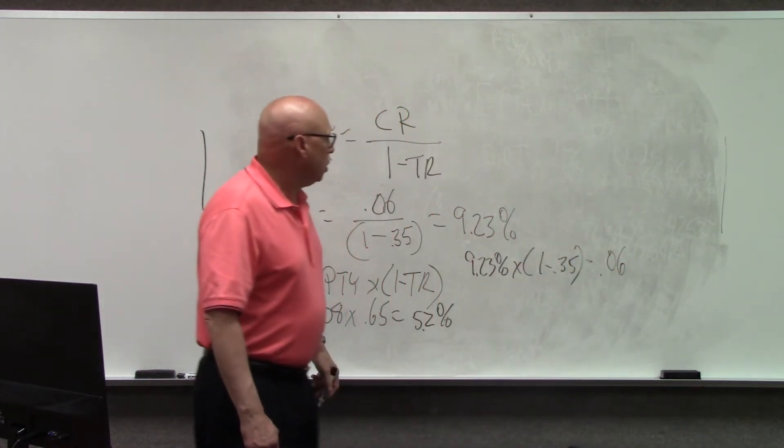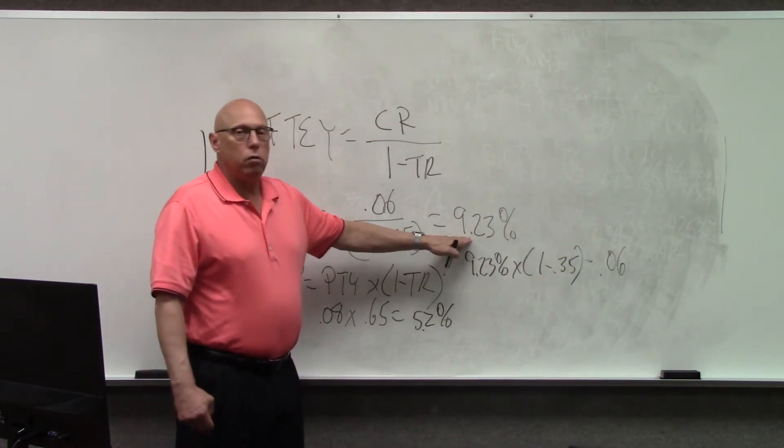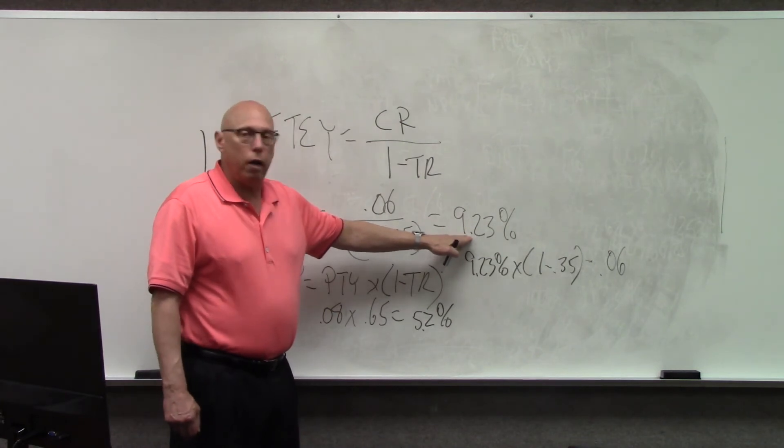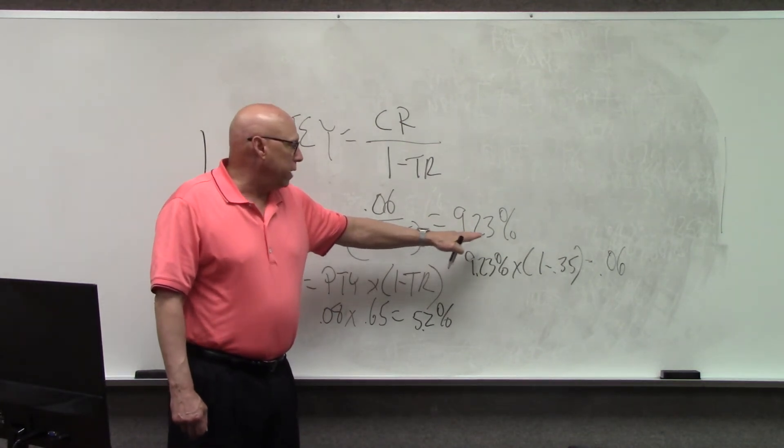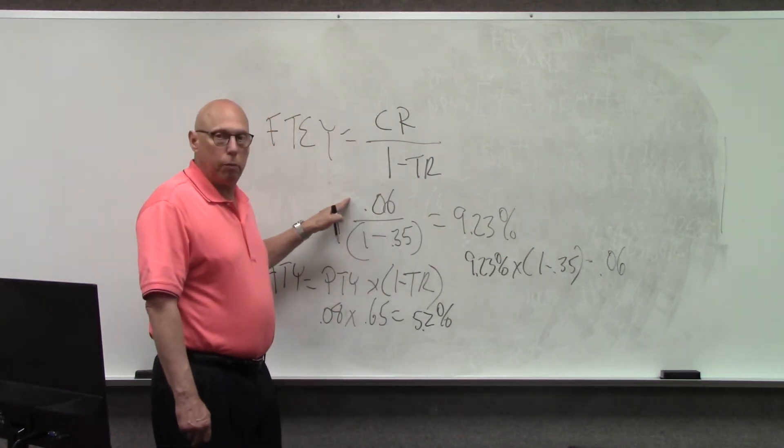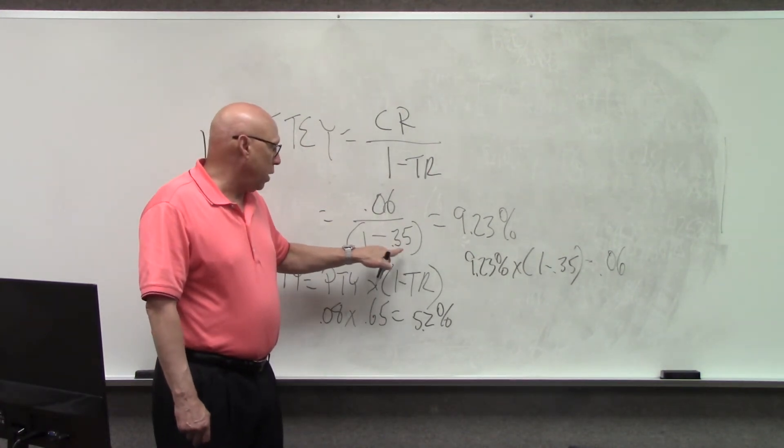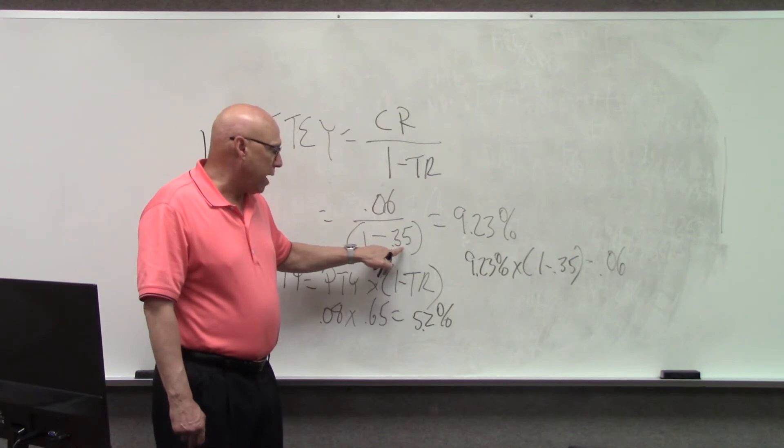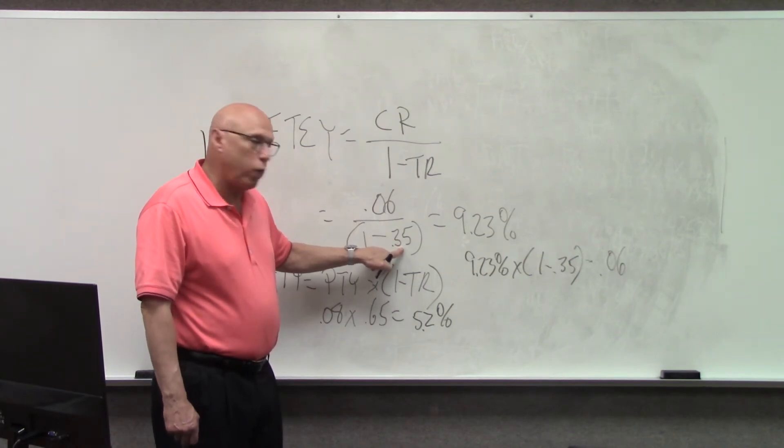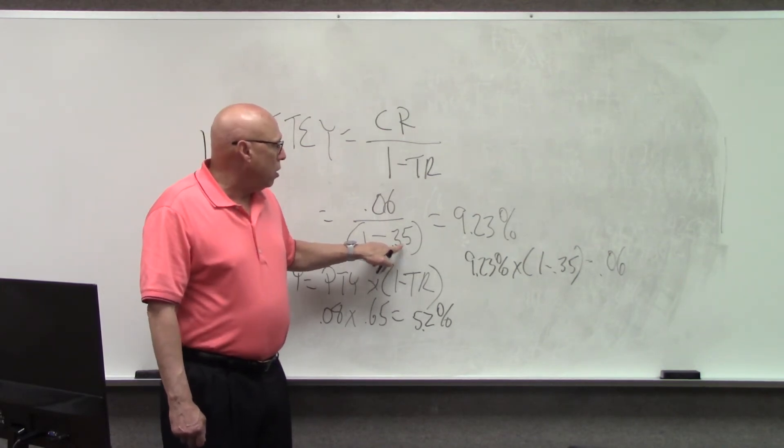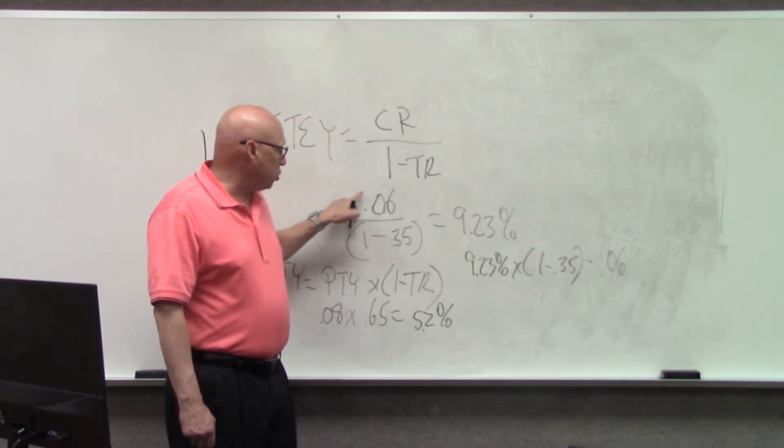So, don't look at the taxable bond and say, oh, 9.23% is much higher than the 6% municipal bond. Not for a person in the 35% tax bracket. And guess what? The higher this bracket goes, this marginal rate goes, the more this 6% is worth.